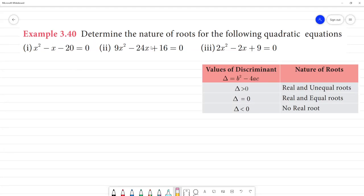Example 3.40. Determine the nature of roots for the following quadratic equation. The nature of the roots will be determined by delta. Delta value, b² minus 4ac formula, will substitute for the following quadratic equation.